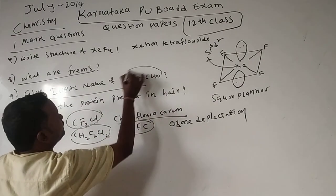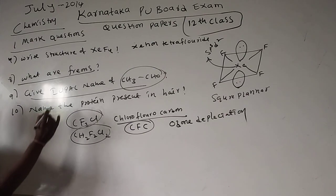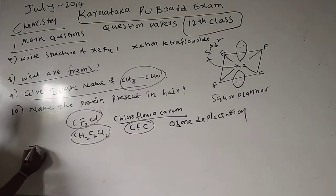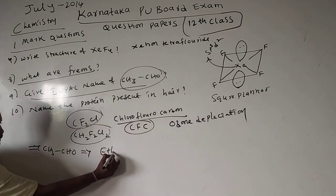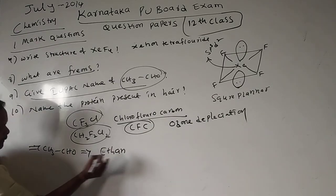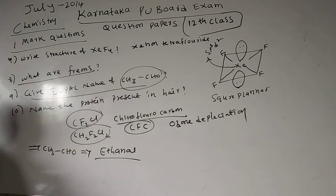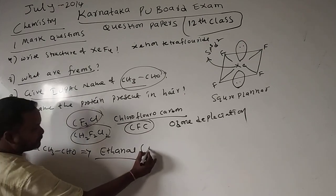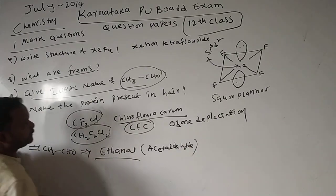Ninth question: give the IUPAC name of CH3CHO. This molecule contains two carbon atoms, no double bond between carbons, and a CHO functional group — an aldehyde. The IUPAC name is ethanal. The common name of this compound is acetaldehyde.